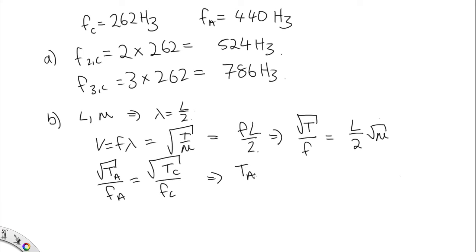So TA over TC is equal to FA over FC. And so just squaring this, we've got FA squared over FC squared.